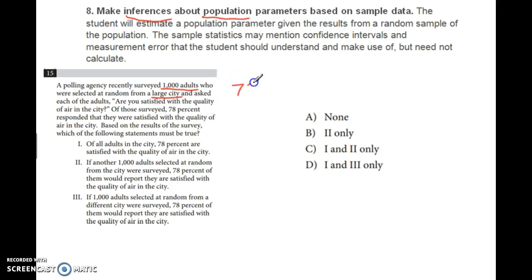But a statistician would say there's always a margin of error, maybe 3%. So instead of exactly 78%, it could be 75% to 81%. That's too specific for a statistician to claim exactly 78%. If another 1,000 adults were selected from the same city, would exactly 78% agree? No, the percentages might change with a new sample. If 1,000 adults were selected from a different city, would 78% agree? We don't know anything about a different city. We can't make inferences about a different city. So the answer is none.